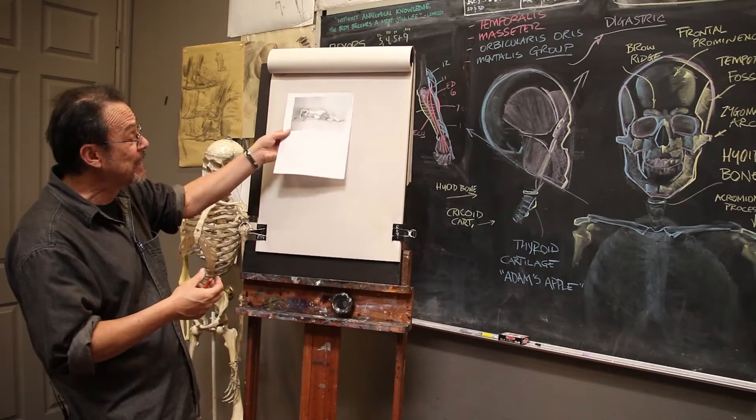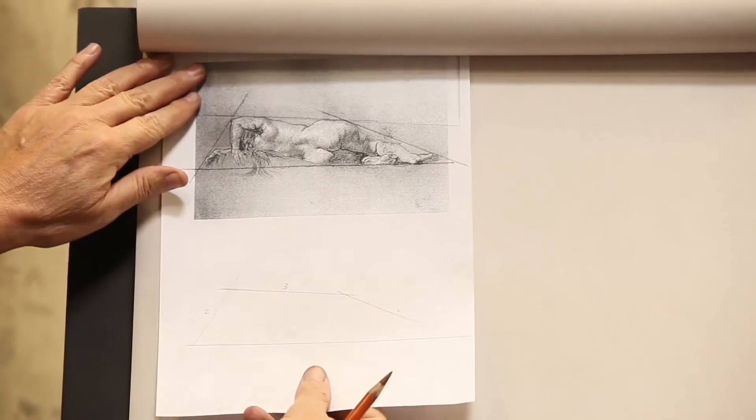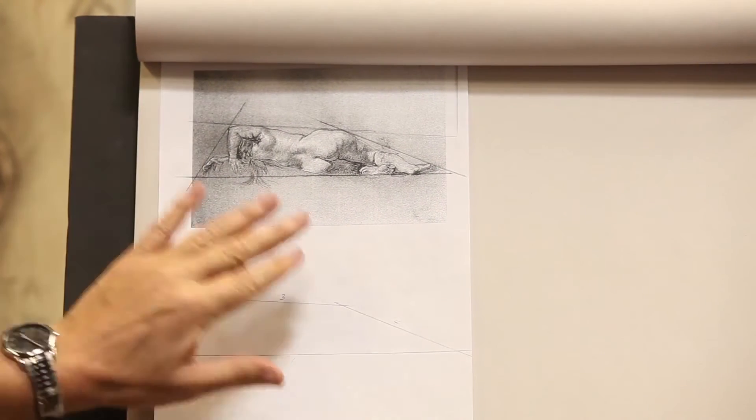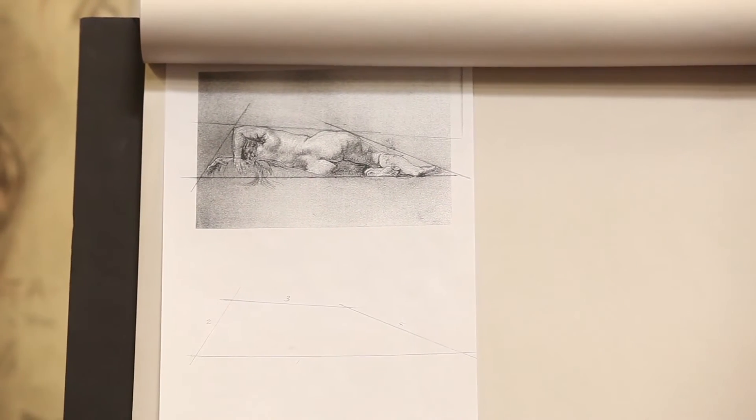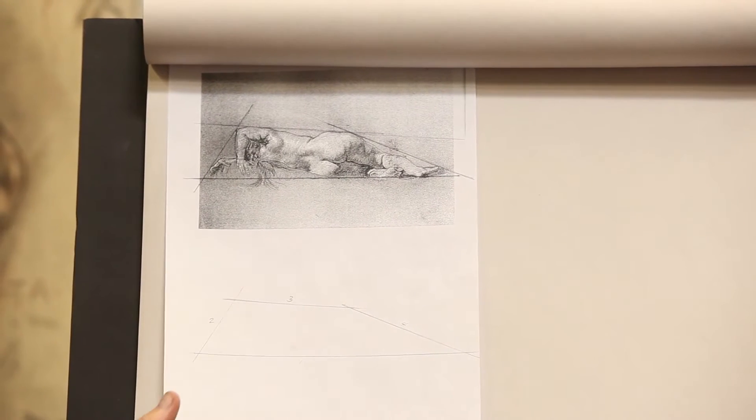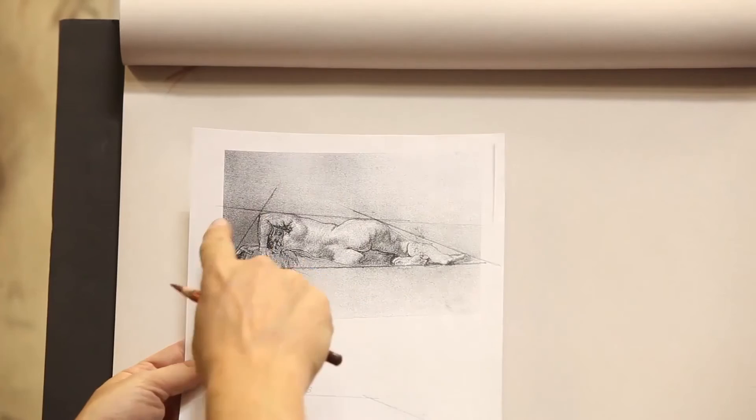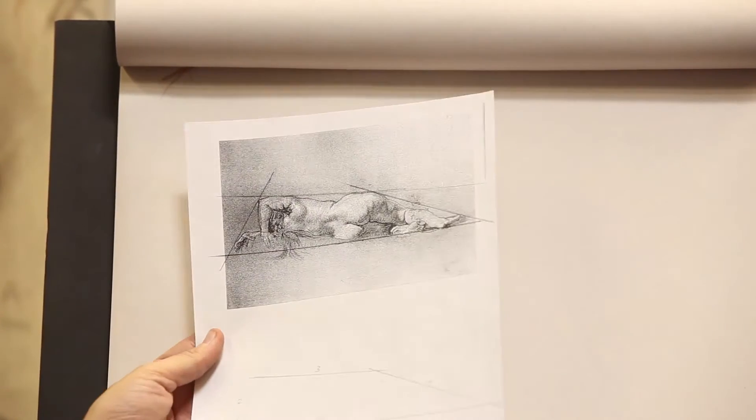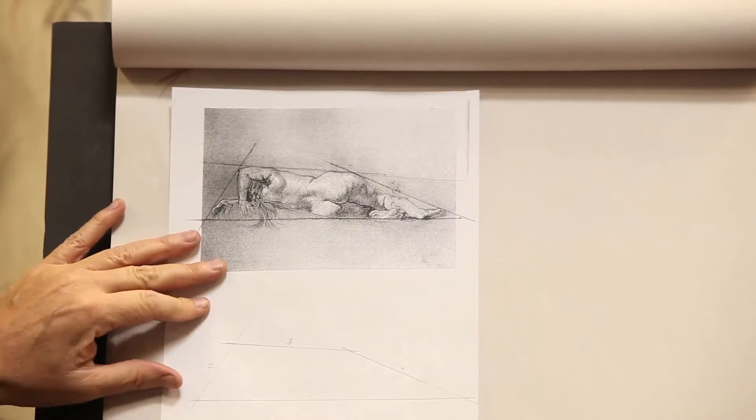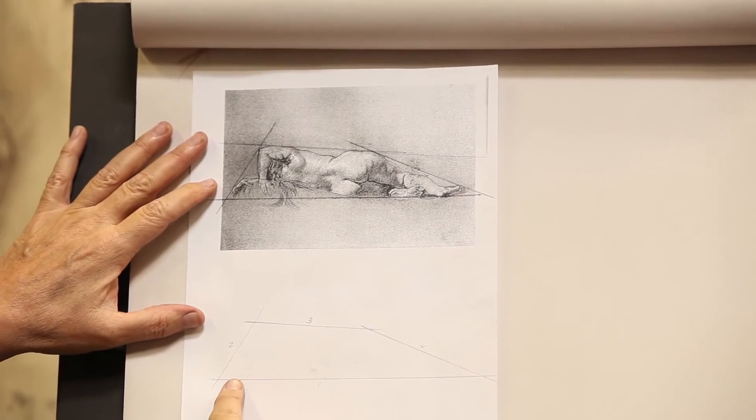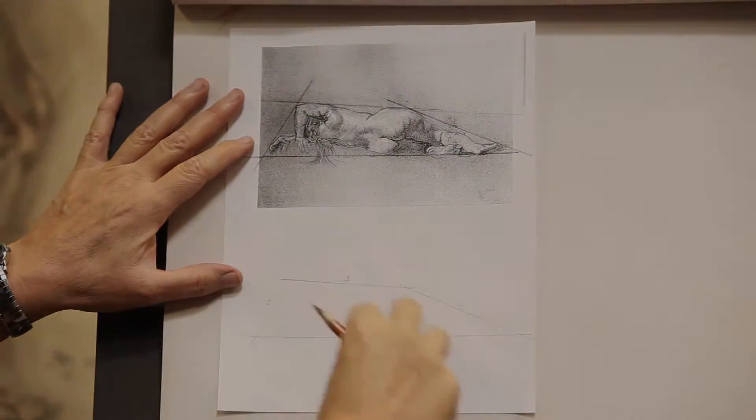This one works best, to me, when you have a reclining pose like this one by, I believe, Joseph Shepherd. What you have here is basically the box that the model would fit into, and what I did for you here was I actually just drew the box by itself, so this would fit right in.